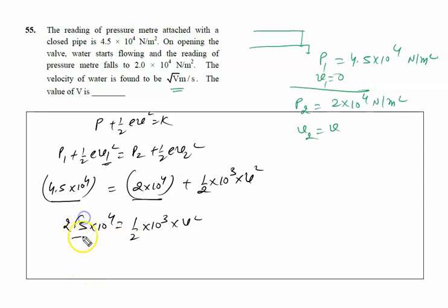We calculate: 10³ cancels out, so V² is given as 50.